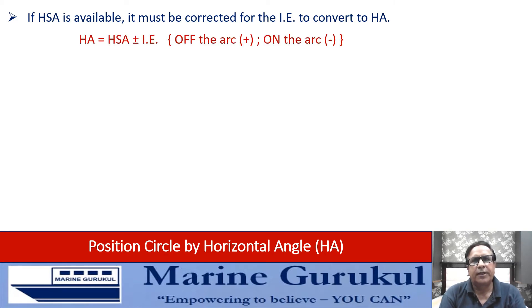Horizontal angle equals horizontal sextant angle plus or minus index error. Off the arc, index error would be plus; on the arc, index error would be minus.